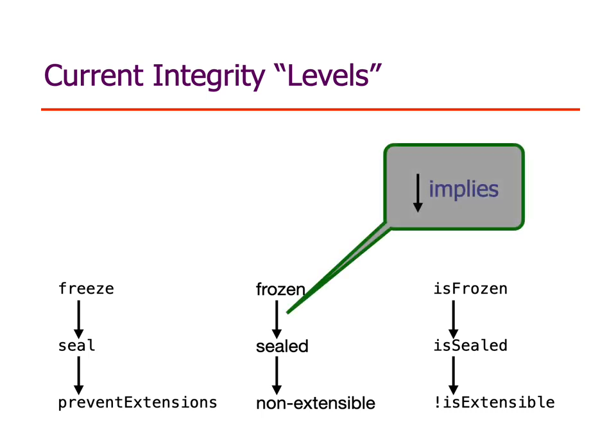To review the current situation, just as orientation and background: JavaScript currently has three integrity levels — frozen, sealed, and non-extensible. There's a linear, fully ordered hierarchy among them where frozen implies sealed, sealed implies non-extensible, and because it's a fully ordered hierarchy, today we refer to those as levels.